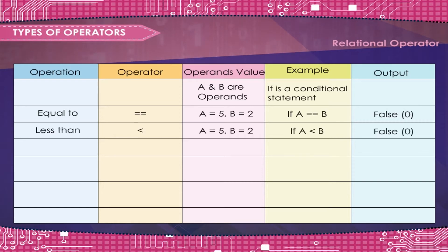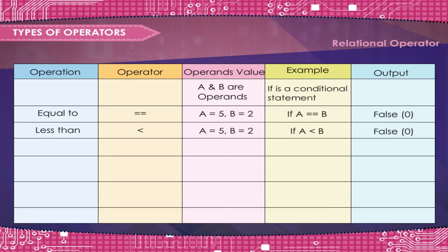Less than: A is equal to 5, B is equal to 2. If A is less than B — False, 0.